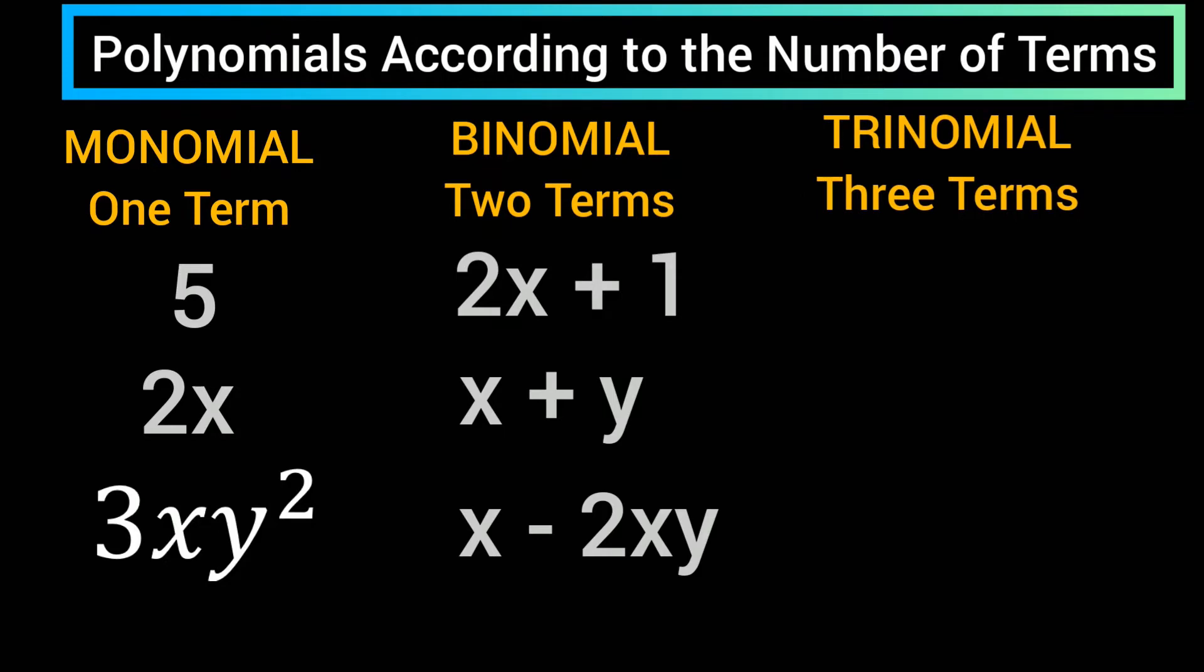Trinomial: three terms. Examples: x plus y minus 4, x squared over 2 plus 2x minus 1.